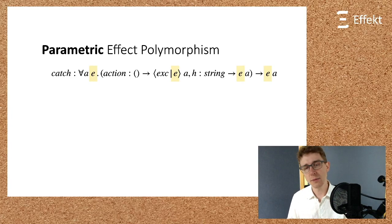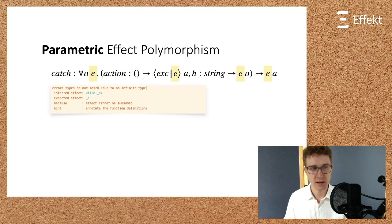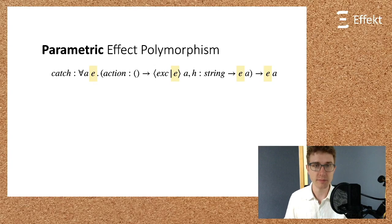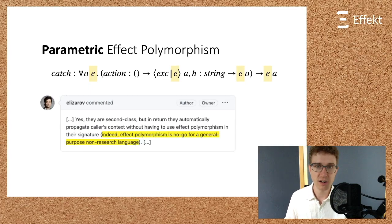Parametric effect polymorphism is common practice in popular research languages like Koka, Frank, or Helium. However, from a practical point of view, parametric effect polymorphism can quickly become verbose and complicated. Programmers are then confronted with type errors like this or like this. While these example error messages are from the language Koka, the problem itself is not specific to Koka, which is a great language. We, that is the Effekt language research team, agree with Roman Elizarov, one of the Kotlin developers, that working programmers should not be confronted with parametric effect polymorphism.